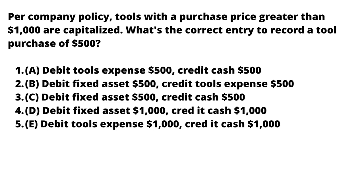We have been given five options. Option A is debit tool expense with $500 and credit cash with $500. Option B is debit fixed asset with $500 and credit tool expense with $500.